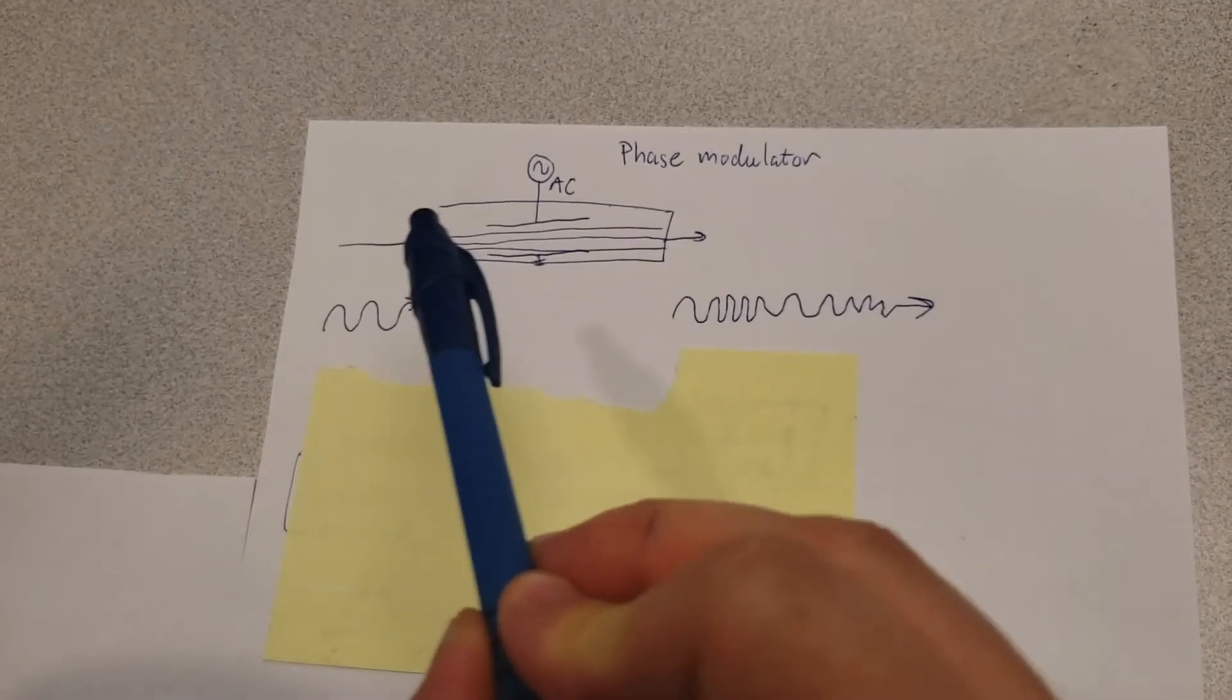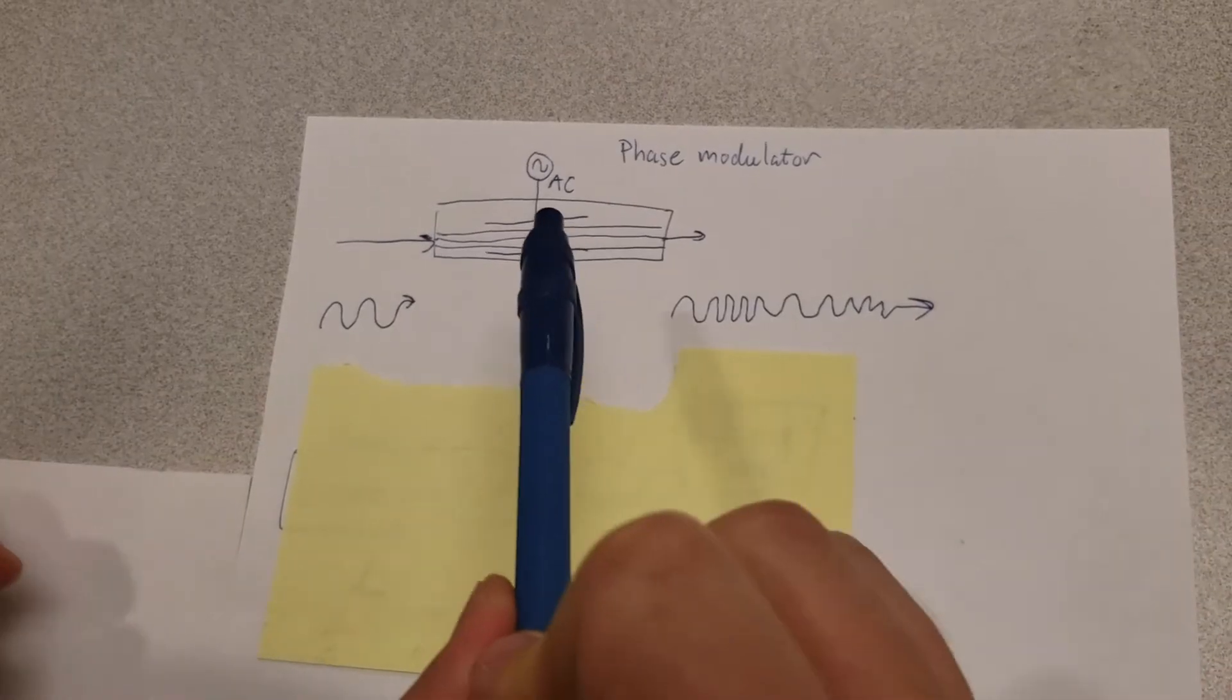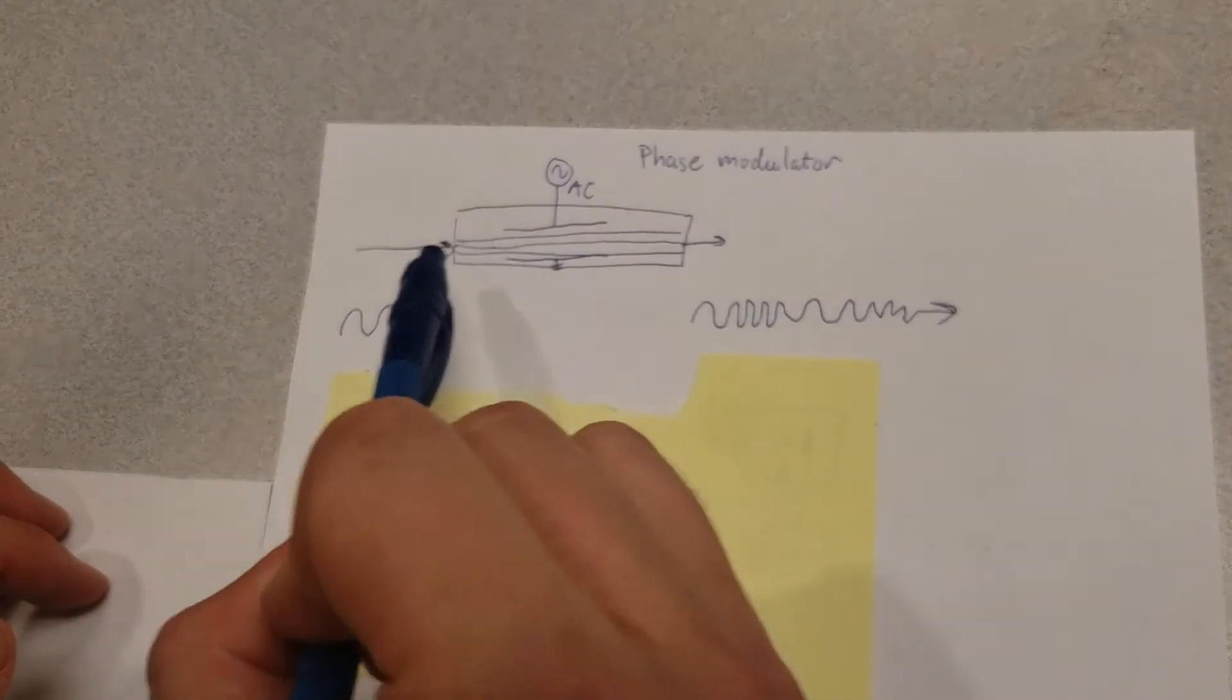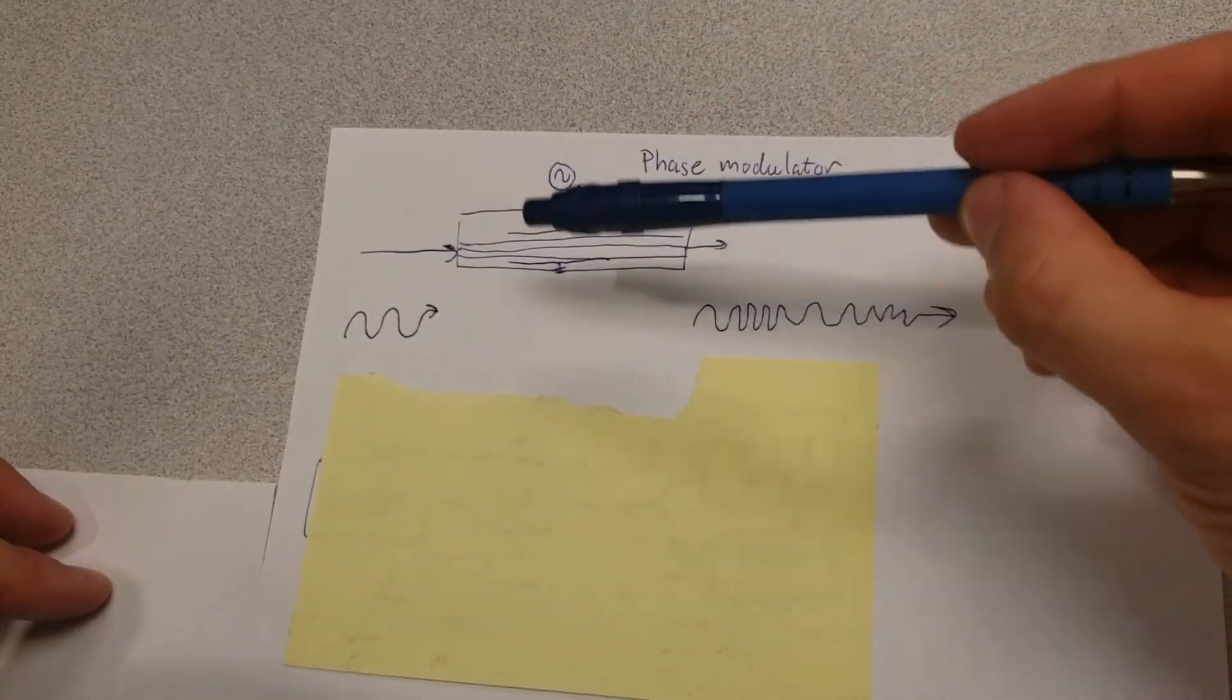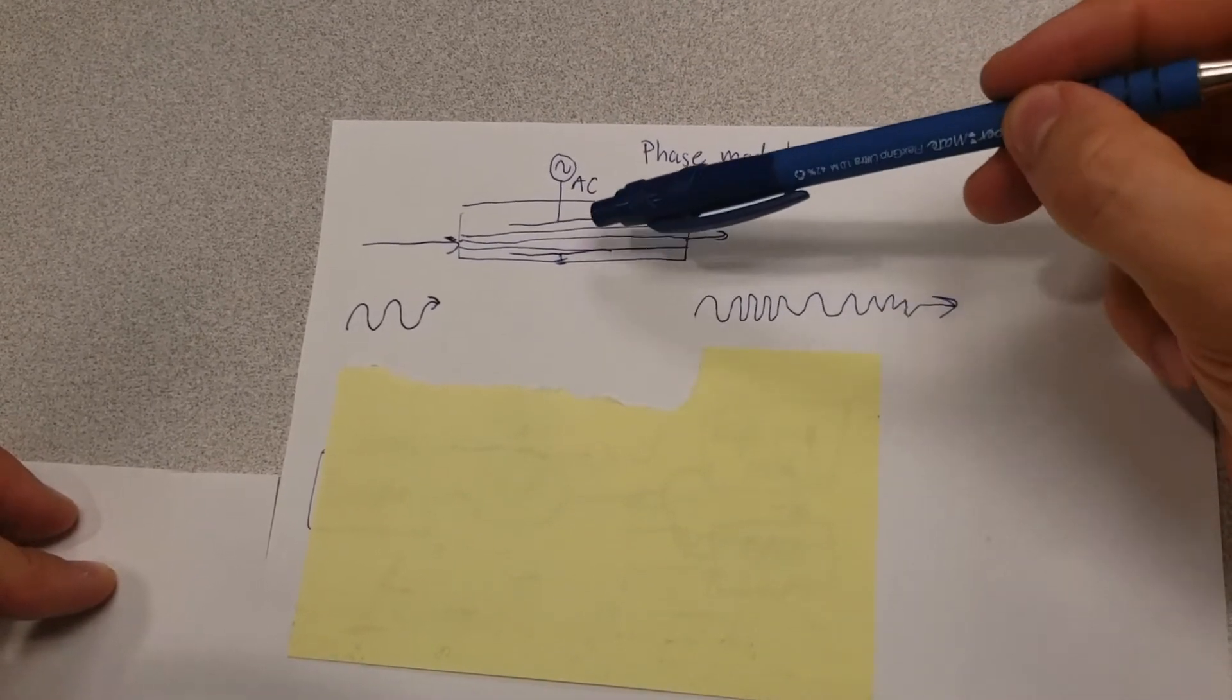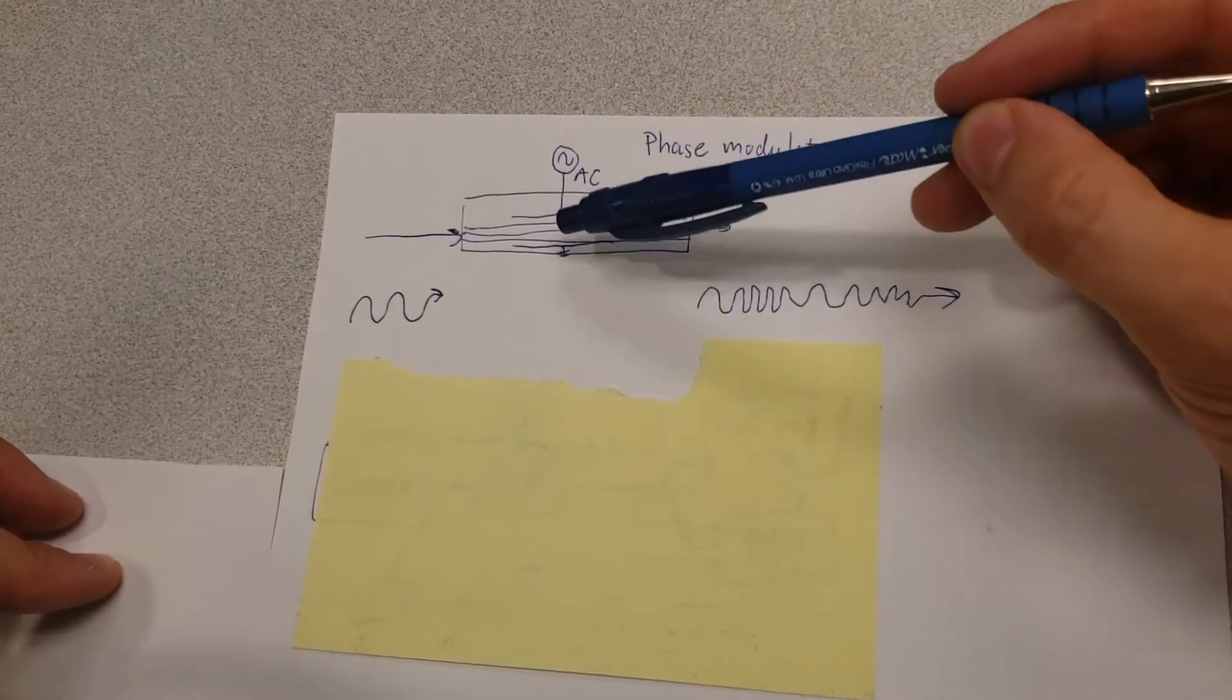Essentially a phase modulator is very similar to an electro-optical modulator that we discussed in a previous video, only this time it doesn't have two split tracks, it only has a single track. So you send light into one port, it goes through a particular kind of crystal and then it goes to the other port. Now this crystal has some special properties that if you apply an external electric field to it, then its refractive index changes, which means that if you apply a higher voltage here, then the phase of the light will be varied more and more.